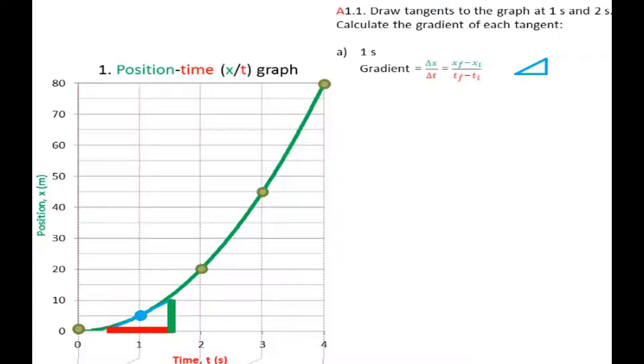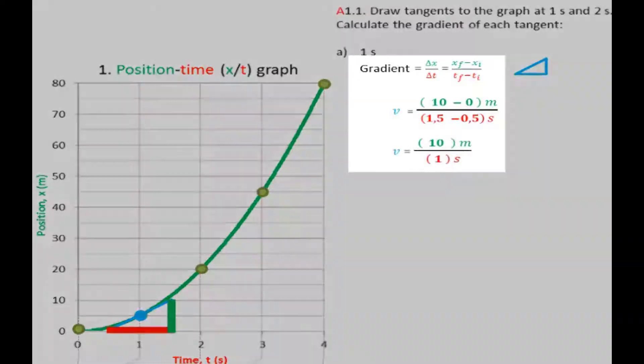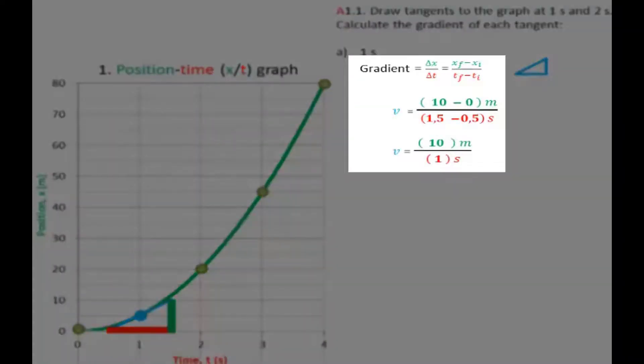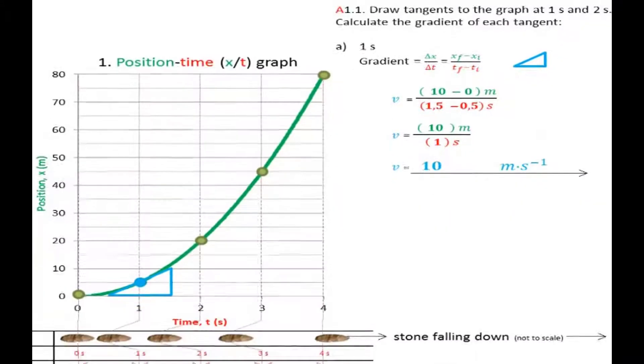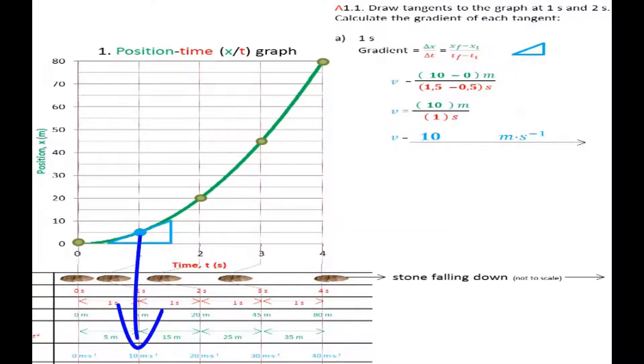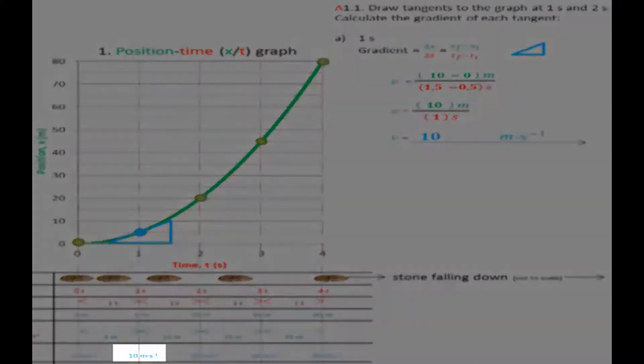x-final minus x-initial over t-final minus t-initial. x-final is 10 meters, x-initial 0 meters. Run is t-final minus t-initial, 1.5 seconds minus 0.5 seconds. Rise is 10 meters, run 1 second. Gradient 10 meters per second. And indeed that is the velocity, the instantaneous velocity, at time 1 second.